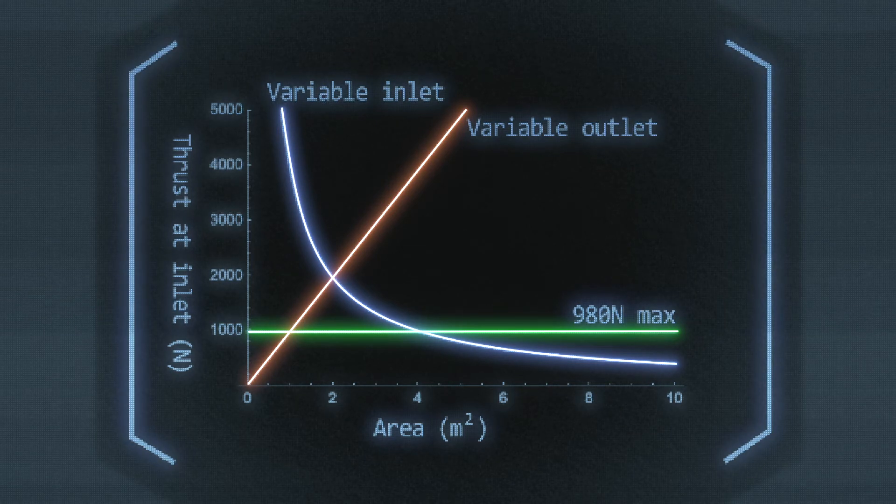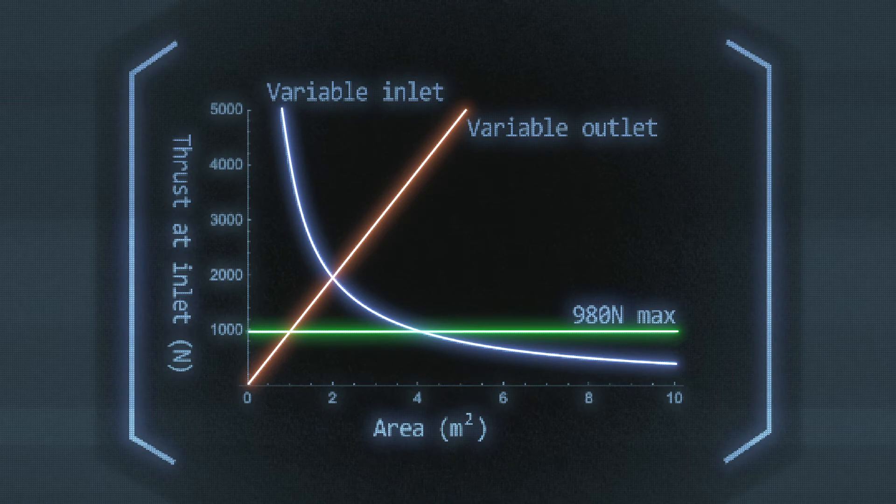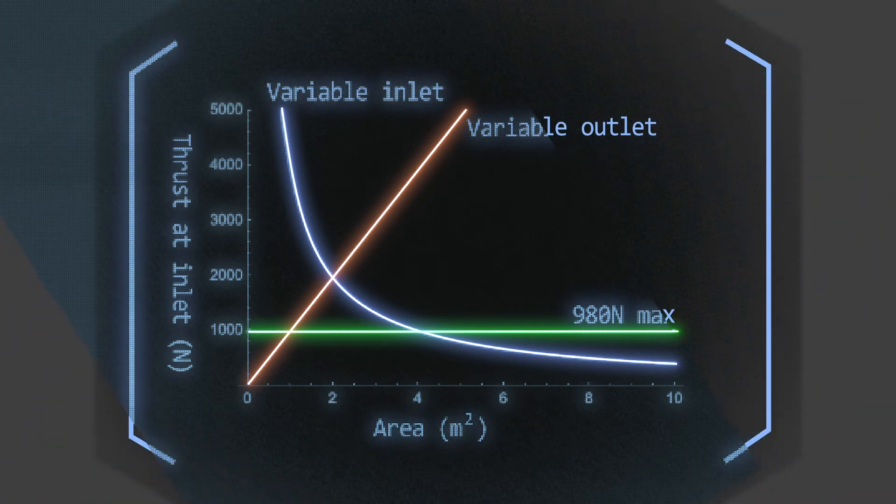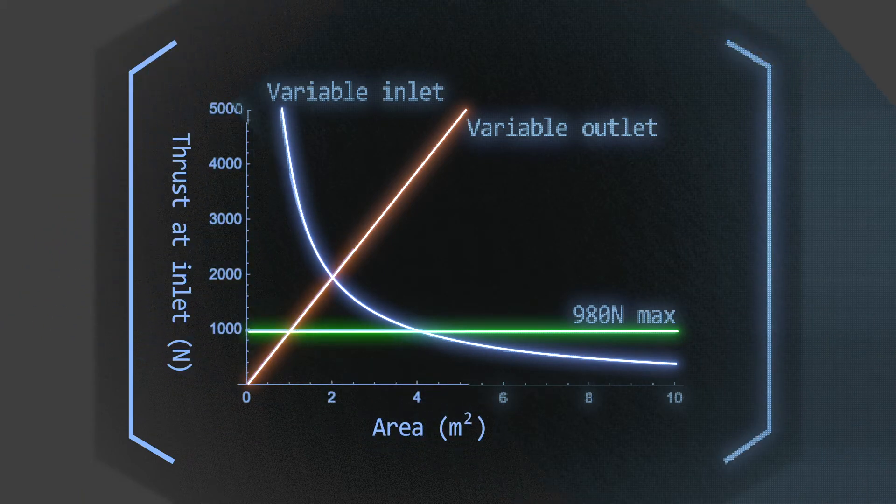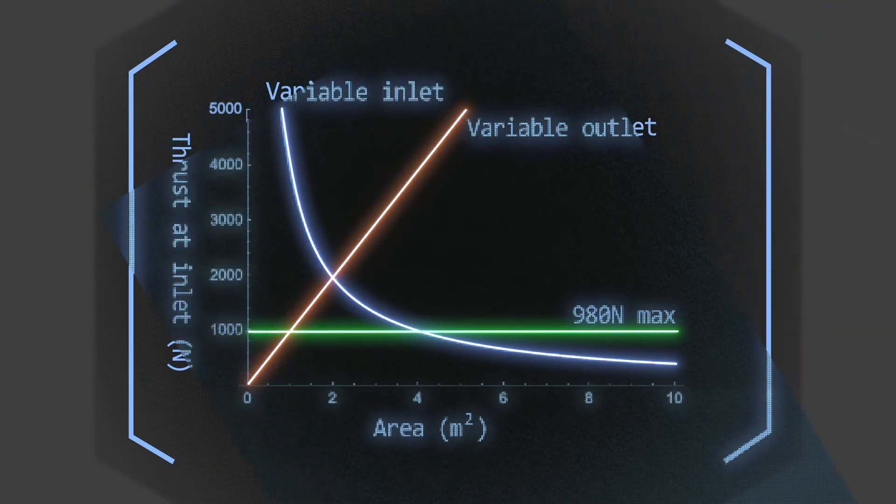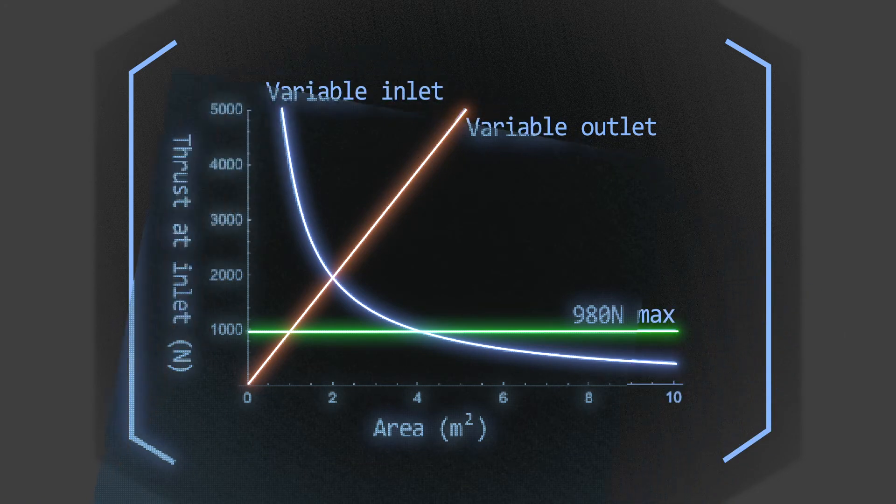When determining what area is best for both scenarios, we should take values below 980 newtons as shown by the green line. If we look at the graph with the variable inlet area, which is the blue line, good areas are anything above 4 square meters.